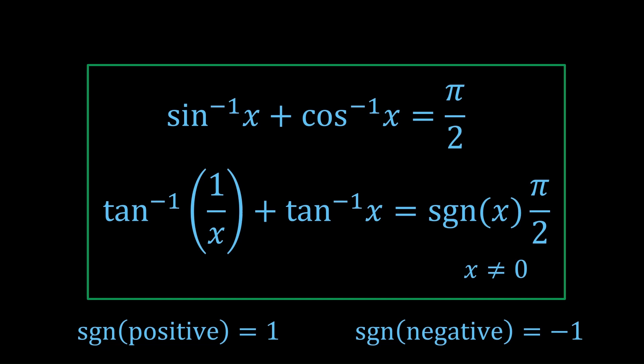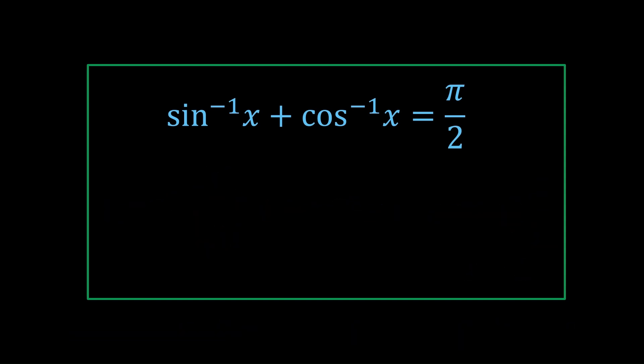And the sine of 0 is 0, but we're not taking x equals 0 here, so we don't need to worry about that. A more common form of this formula is when we take positive x values only and rearrange it, which means if you ever see tan inverse 1 on x for a positive x, then it's literally just π on 2 minus tan inverse x. It's nothing crazy.